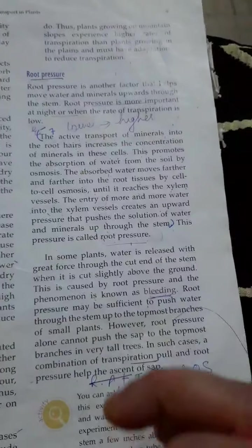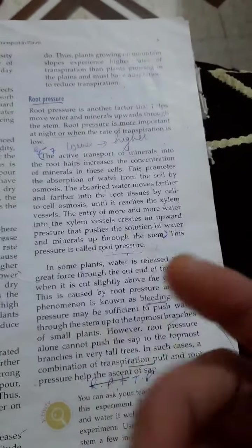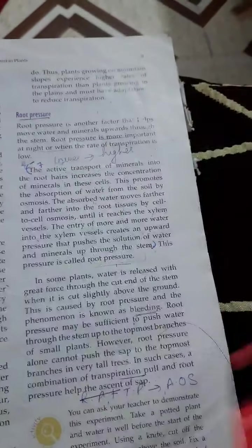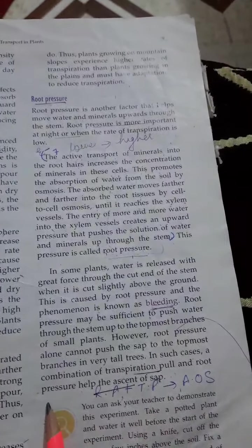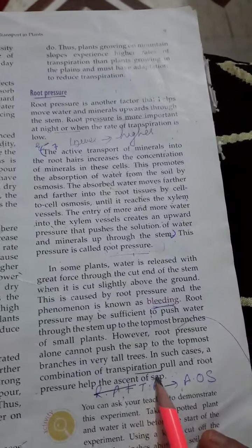For example, if we assume the date palm or the coconut tree, if we want to transport water from root to top of that plant we need both transpiration pull and root pressure so that the ascent of sap can happen, means upward movement of water and minerals.